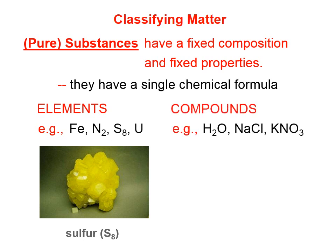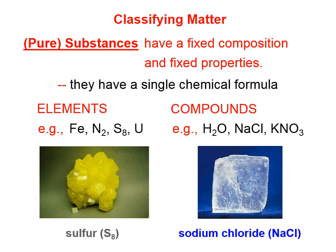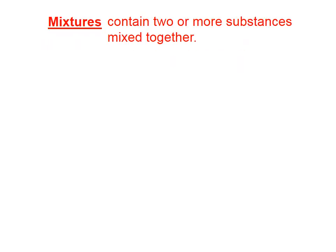Compounds are also substances — water, table salt, potassium nitrate. You can see that each one of those has a single chemical formula. So if something is a substance, then it's either an element or it's a compound. If something is not a substance, then it's a mixture.